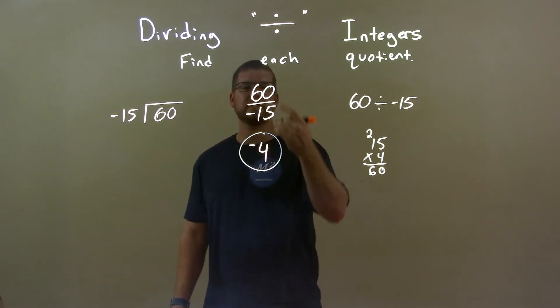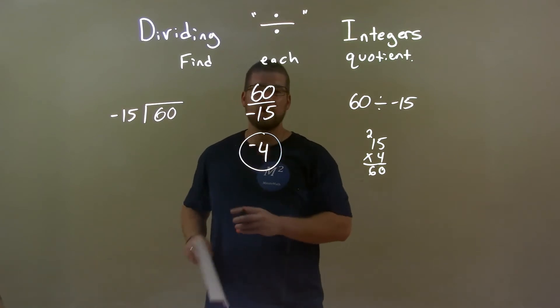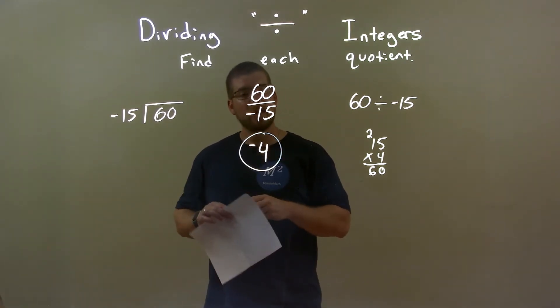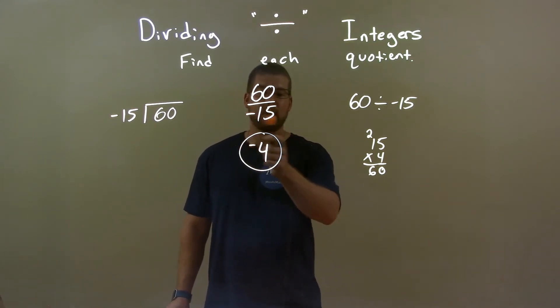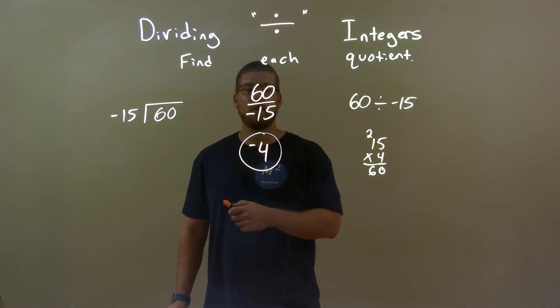So, quick recap. We're getting 60 divided by negative 15. Well, 60 divided by 15 is a positive 4. But then a positive divided by a negative is always going to be a negative. So, combining these two facts, our final answer again is negative 4.